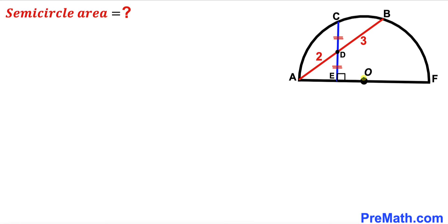Welcome to PreMath. In this video we have got chord AB and perpendicular CE fully confined in this semicircle with center O, as you can see in this diagram, such that they intersect each other at point D.